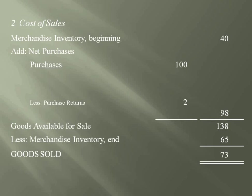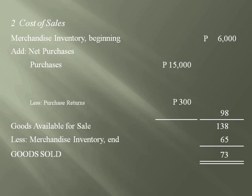As you already know, information must be expressed in financial terms — in terms of money, not just number of chocolate bars. So, assuming you purchased the chocolates at 150 pesos each: merchandise inventory beginning is 40 bars × 150 = 6,000 pesos. Purchases are 100 × 150 = 15,000 pesos. Purchase returns are 2 bars × 150 = 300 pesos, making net purchases equal to 14,700 pesos — that is, purchases of 15,000 less purchase returns of 300.